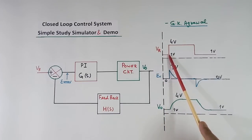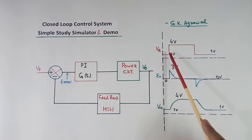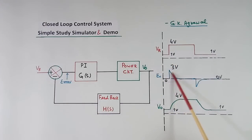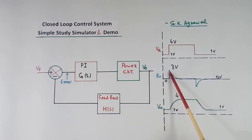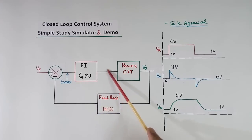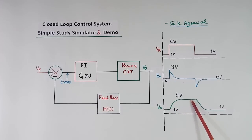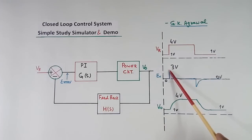Now suppose here we increase this 1 volt to 4 volts. As soon as we make 1 to 4, a 3 volt error will come here — because this was 1 volt and this is now 4 volt, so 3 volt error will come. Because of plus 3 volt, this output will start increasing, and as soon as it increases, the difference will reduce, so error will start reducing.